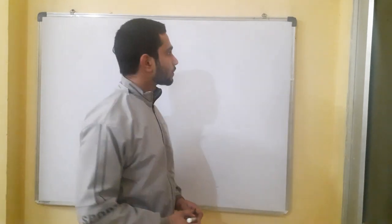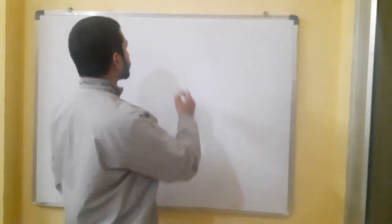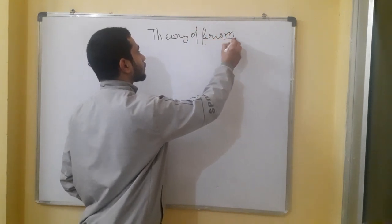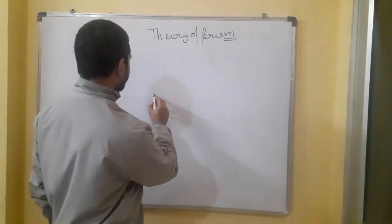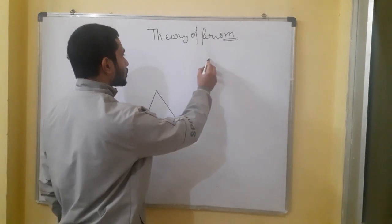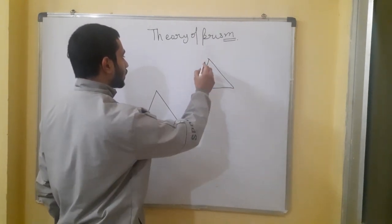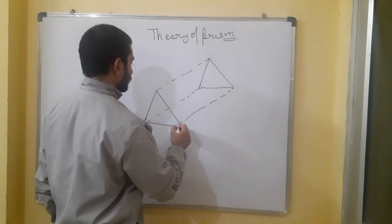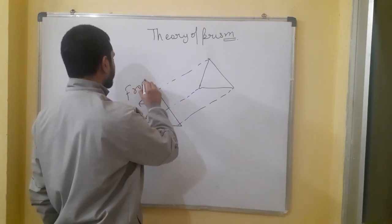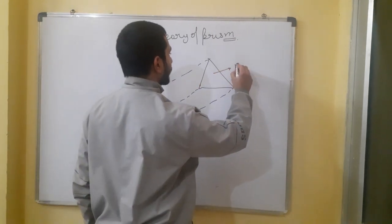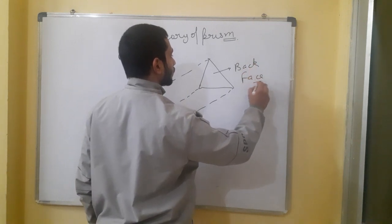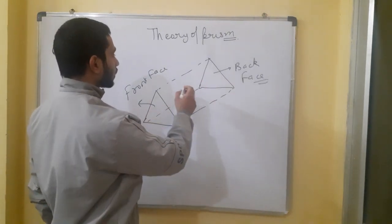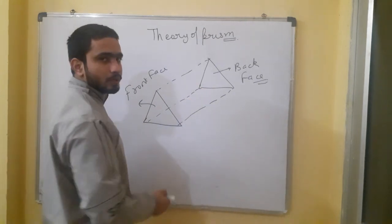We will be seeing the theory of prism, which is a very important topic in optics. A prism is a combination of two triangles with a cylindrical shape connected to it. It has a front face and a back face, along with edge faces. This is the general structure of a prism.